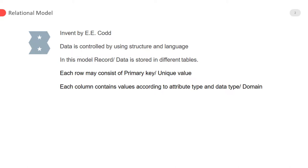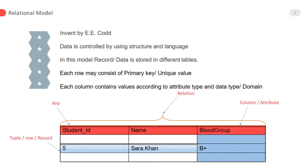Invented by E.F. Codd, data is controlled by using structure and language. In this model, record data is stored in different tables. Each row may consist of primary key or unique value. Each column contains values according to attribute type and data type or domain. The relational database is very important and useful, and it is mostly and easily implemented in database systems.